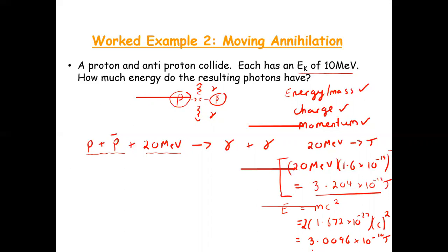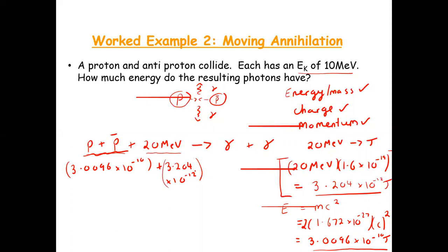So the total energy in is the rest mass energy of the two protons plus the 20 mega electron volts of kinetic energy. That's 3.0096 times 10 to the minus 10 plus 3.204 times 10 to the minus 12. Adding the two together, the total energy in is 3.04164 times 10 to the minus 10 joules.